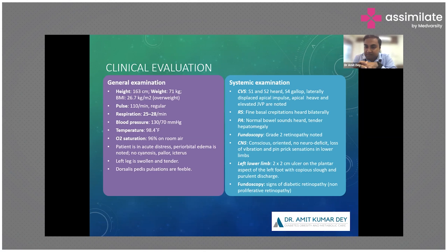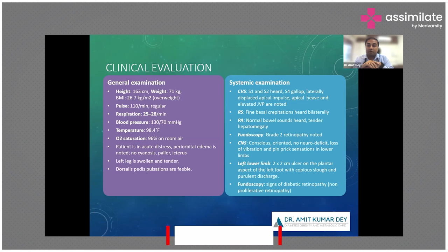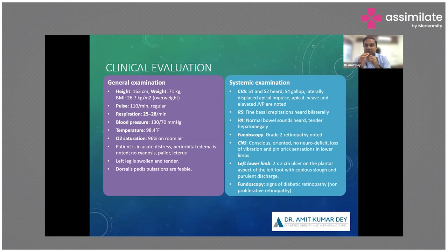Fundoscopy showed grade 2 retinopathy. The patient was conscious and oriented with no neurological deficit, but there was loss of vibration and pin-prick sensation in the lower limb, indicating advanced neuropathy — which has led to the foot ulcer. Most commonly these are neuro-ischemic ulcers. On the left lower limb there was a 2×2 cm ulcer on the plantar aspect of the foot with copious slough and purulent discharge. Fundoscopy confirmed non-proliferative diabetic retinopathy. Having a fundus camera or ophthalmoscope in an OPD setting is quite helpful to assess the effect of diabetes and hypertension on the fundus.